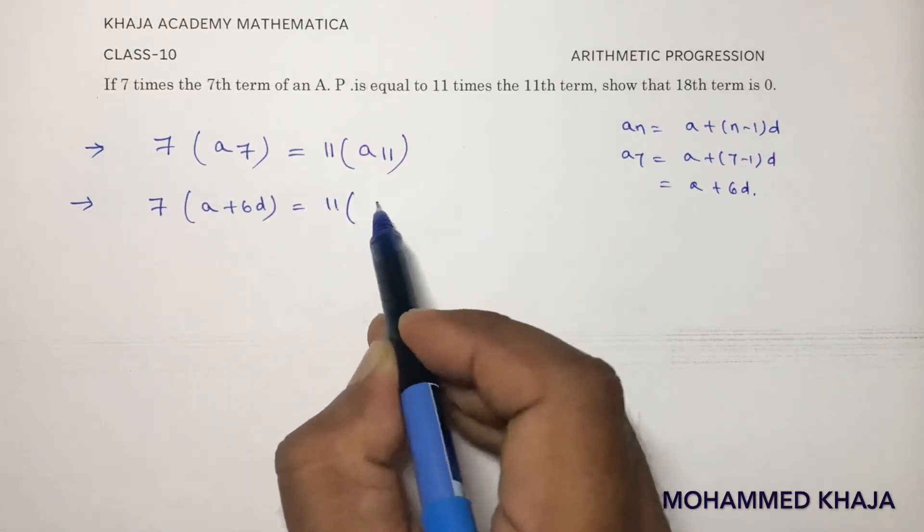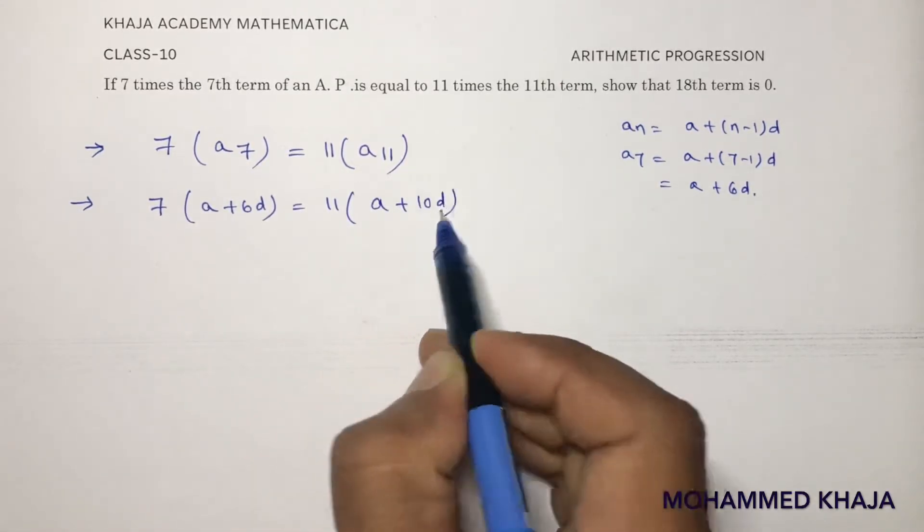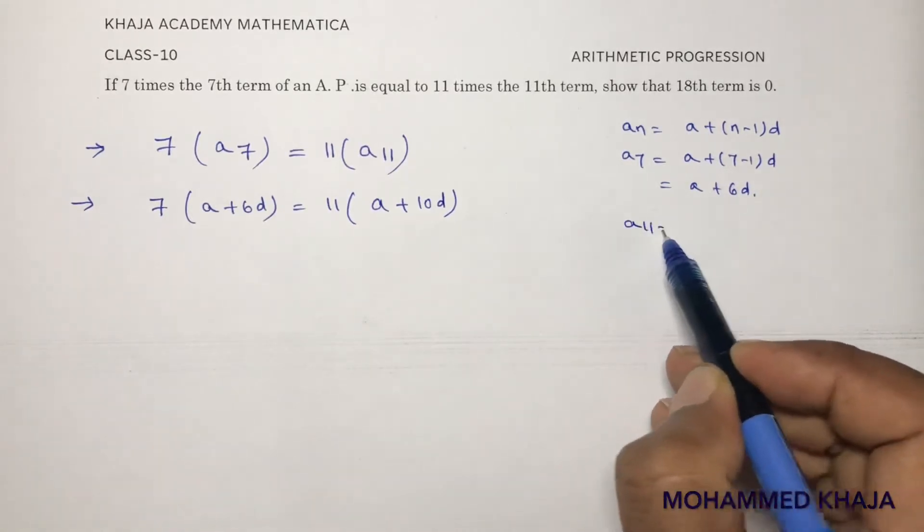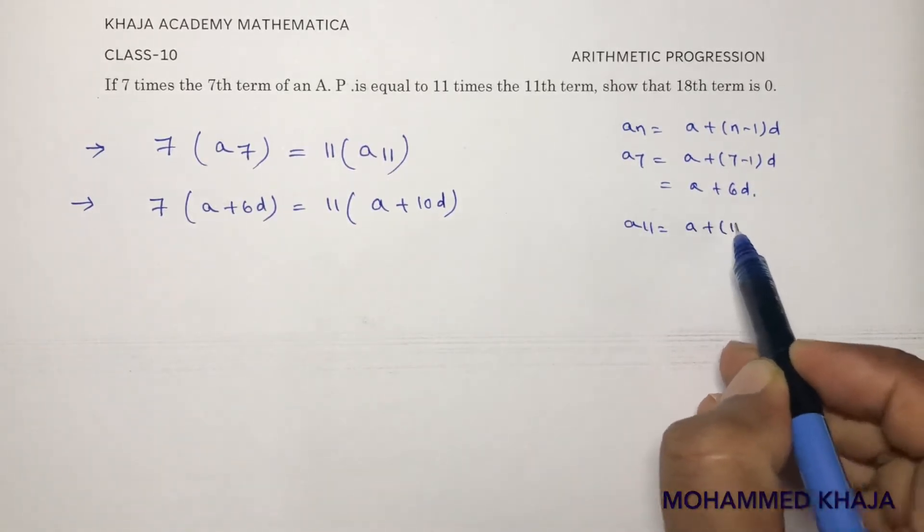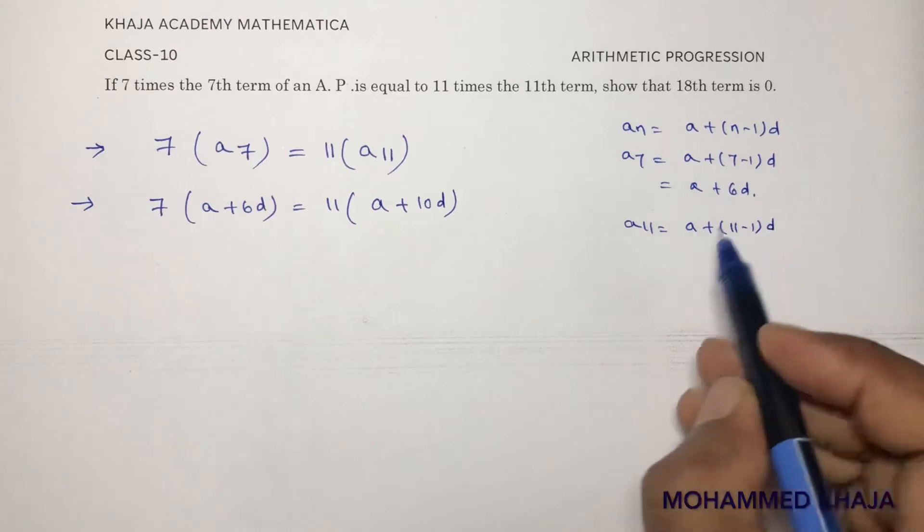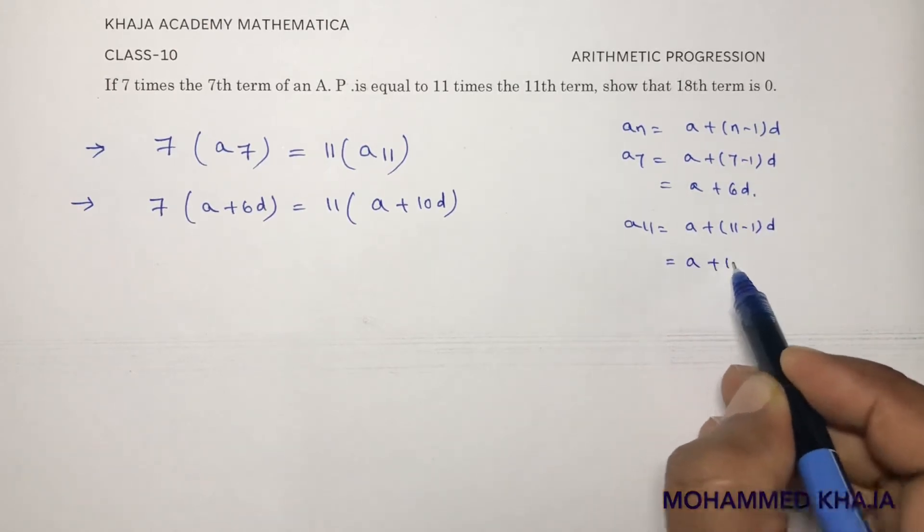In the same way, 11 times the 11th term will be a plus 10d. So a11 will be a plus 11 minus 1 into d, which is a plus 10d.